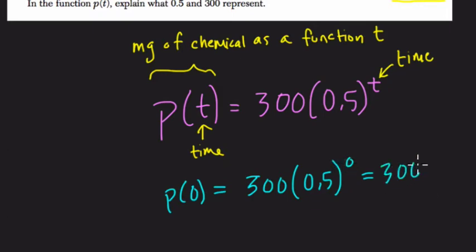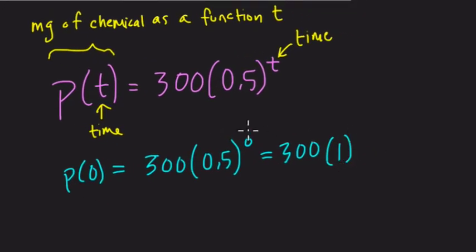So 300 times 0.5 to the 0, well, 0.5 to the 0 is just 1. So that exponent applies just to this piece right here, not to the 300. But that's just 1, which is 300.